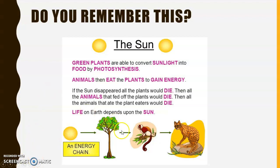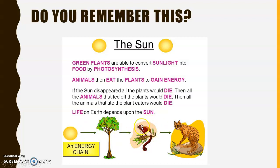That's just a little food chain where the sun gives off energy to a plant, gives off energy to a monkey, and gives off energy to a leopard.